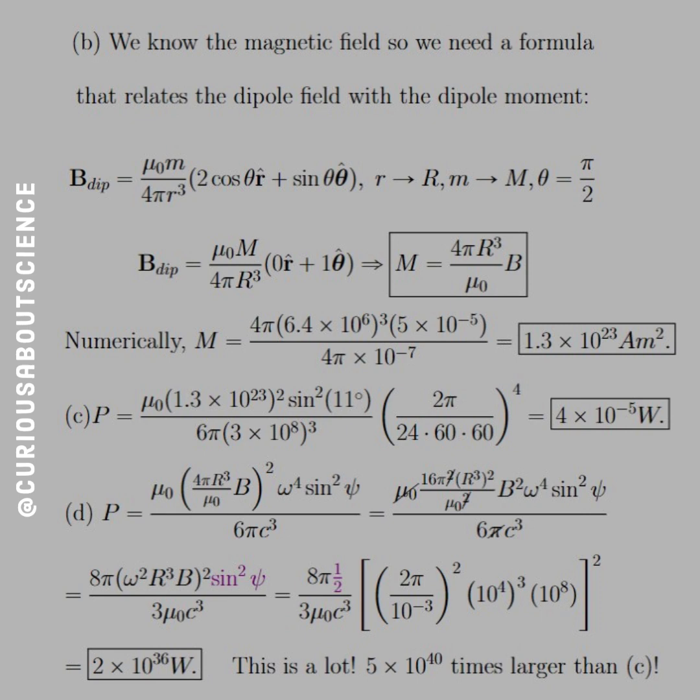So the dipole moment is 1.3 times 10 to the 23 AM squared. So again, area, or amps per meter squared. We think that's big, but I assure you that magnetic field is not that strong. All laboratory magnets get stronger than that.